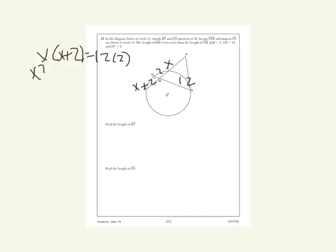Distribute it out, and you get X squared plus 2X equals 24. Now, the X squared indicates that you have a quadratic here, so you subtract the 24 from both sides to get it equal to 0, and you get X squared plus 2X minus 24 equals 0.